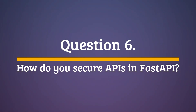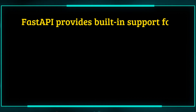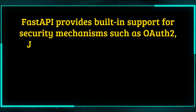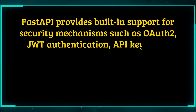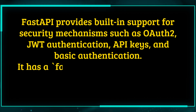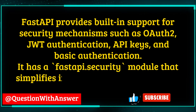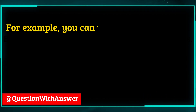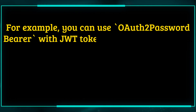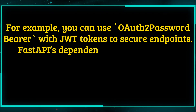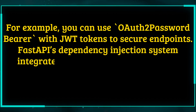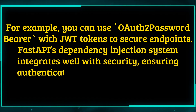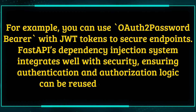Question 6: How do you secure APIs in FastAPI? FastAPI provides built-in support for security mechanisms such as OAuth 2, JWT authentication, API keys, and basic authentication. It has a FastAPI.security module that simplifies implementing authentication flows. For example, you can use OAuth 2 password bearer with JWT tokens to secure endpoints. FastAPI's dependency injection system integrates well with security, ensuring authentication and authorization logic can be reused across routes.